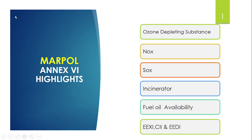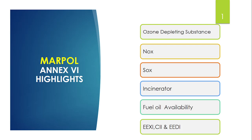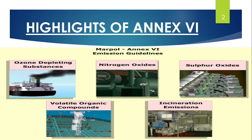The major highlights of MARPOL Annex 6 are: Ozone Depleting Substances, NOx, SOx, Incinerator, Fuel Oil, EEXI, CII, and EDI. Ozone Depleting Substances, NOx, and SOx are exhaust pollutants affecting the environment. The incinerator emits gases when burning sludge or oily rags. Fuel oil sulphur percentage and technical improvements are captured in EEXI, CII, and EDI.